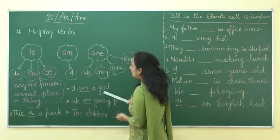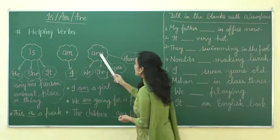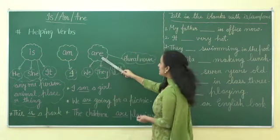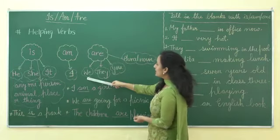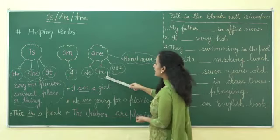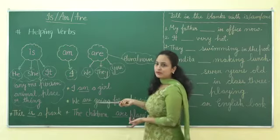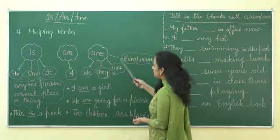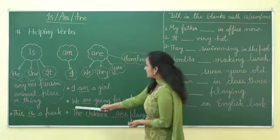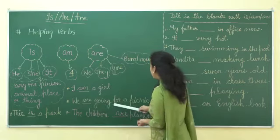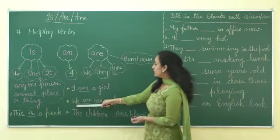Next is 'am'. We always use 'am' with 'I' only, like 'I am a girl'. Next is 'are'. 'Are' is used with plural nouns like we, they, you, and any plural noun like children, trees, and boys.